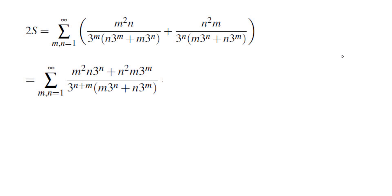What I do notice is that on top I have a factor of mn. So if I factor mn on top, I will end up with m times 3 to the power of n plus n times 3 to the power of m. This is very nice because that cancels the ugly term m times 3 to the power of n plus n times 3 to the power of m, and we get a much simpler sum.